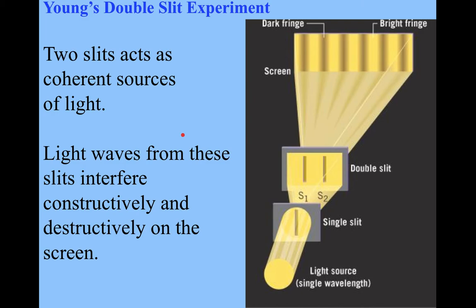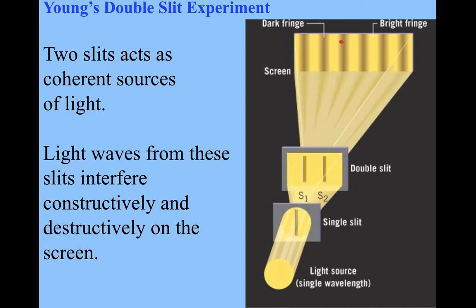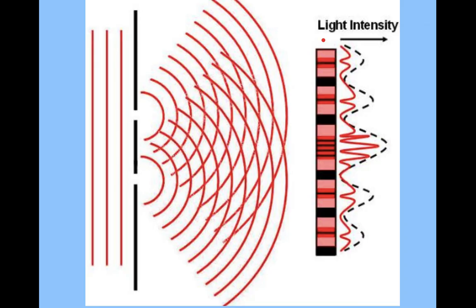One of the most famous experiments for this is Young's double slit. He sent light waves through two barriers. You can see the screen here—band of bright, dark, bright, dark. Bright is constructive, destructive, constructive, destructive.